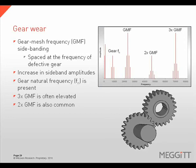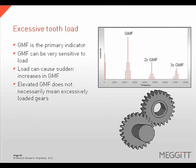Gear wear is characterized by elevated levels of gear mesh frequency and harmonics, with sidebands spaced at the running speed of the defective gear. As gear wear progresses, sideband amplitudes will increase as well as the number of sidebands. The gear natural frequency can be present, and the 2 and 3 times gear mesh frequency amplitudes are often elevated. Gear mesh frequency is the primary indicator of excessively loaded gears, and it can be very sensitive to load, causing sudden increases or decreases in amplitude as load changes.